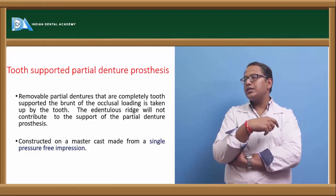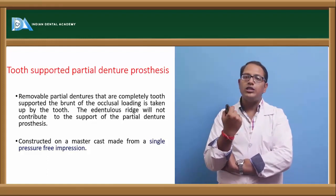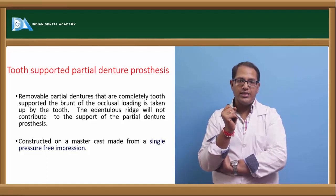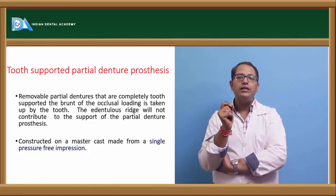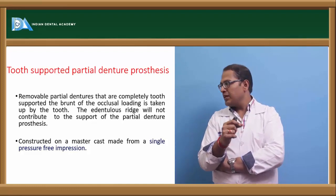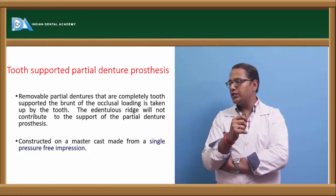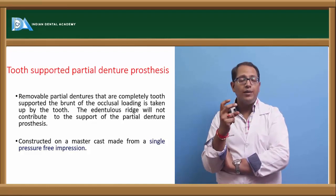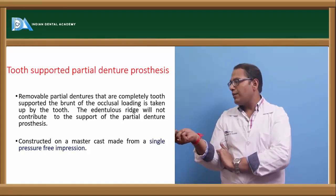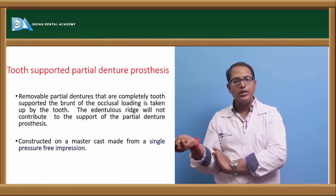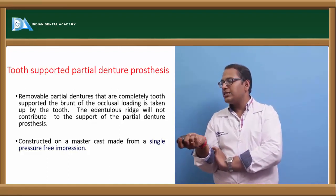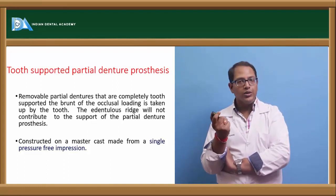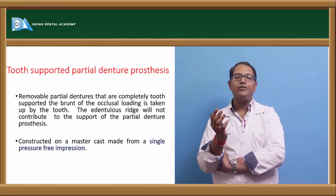There can be tooth-supported or tooth-tissue-supported partial denture prostheses. If it is a tooth-supported partial denture prosthesis, a normal silicone impression material can solve the purpose. For completely tooth-supported removable partial dentures, the burden of occlusal loading is taken up by the tooth, so the exact compression of the edentulous ridge is not our consideration. Support is always onto the tooth, not the ridge. It is constructed on a master cast made from a single pressure-free impression — not mucostatic or mucocompressive, but a normal or selective pressure technique.